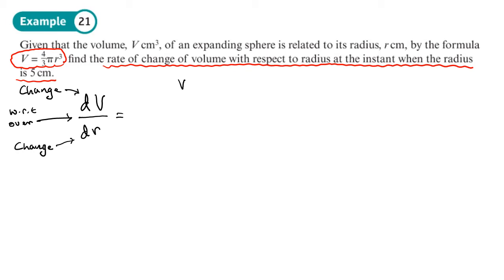Now, we have V equals 4/3 pi R cubed. So we differentiate this with respect to R. Remember, pi is just like a number. It's a constant. So you treat it like a number. So when you do 4/3 pi times by 3, you end up with 4 pi R squared, which is interesting, because that's actually the formula for the surface area of a sphere, 4 pi R squared.